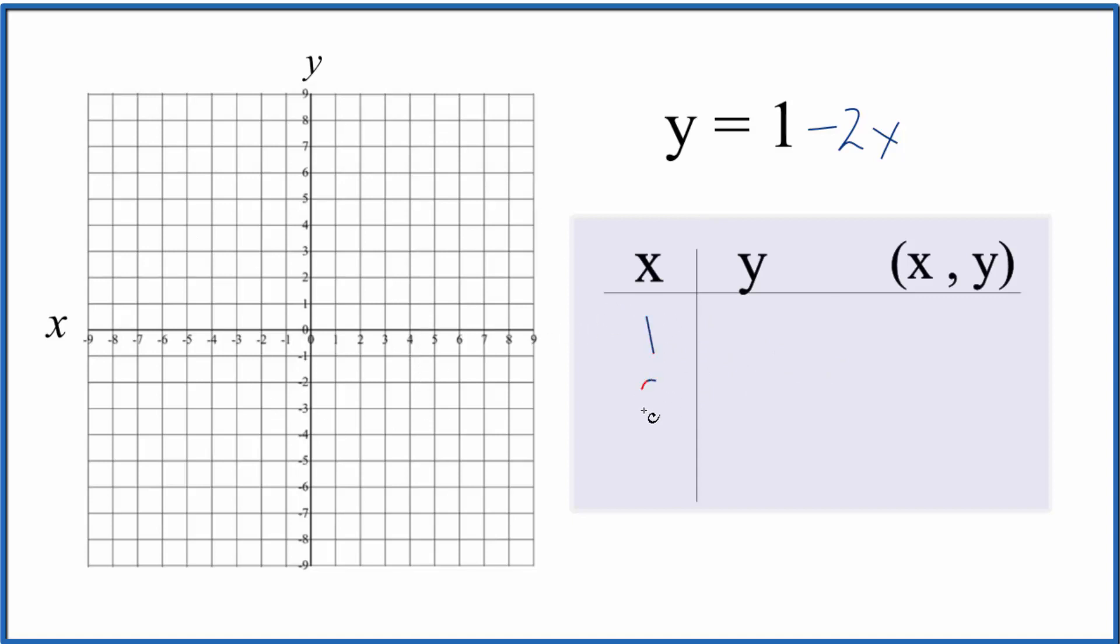Let's just say 1, 0, and negative 1. So if we put 1 in for x, 1 minus 2 times 1, that gives us negative 1. If we put 0 in for x, 1 minus 2 times 0 is 0, so 1 minus 0 is just 1.